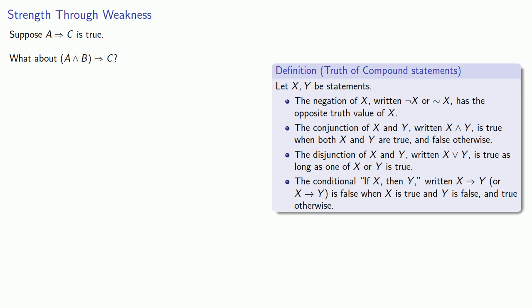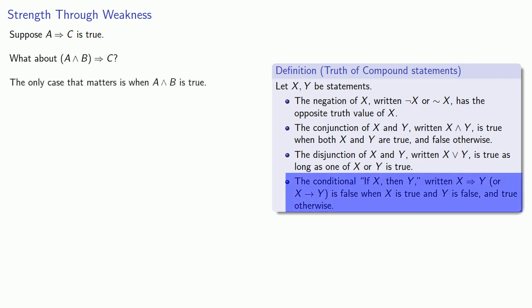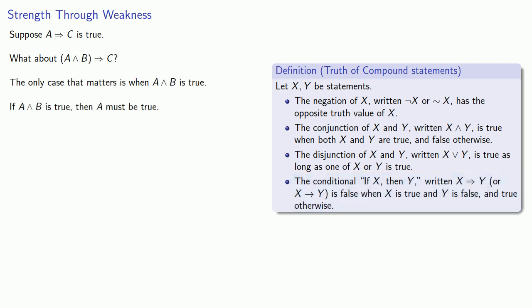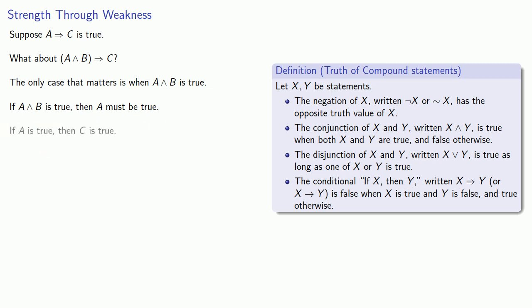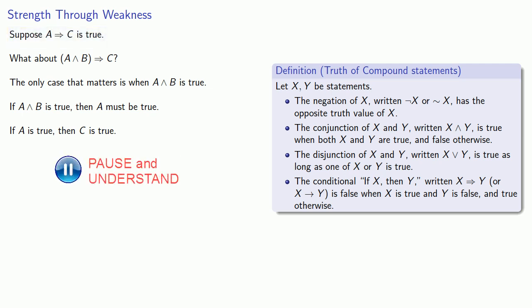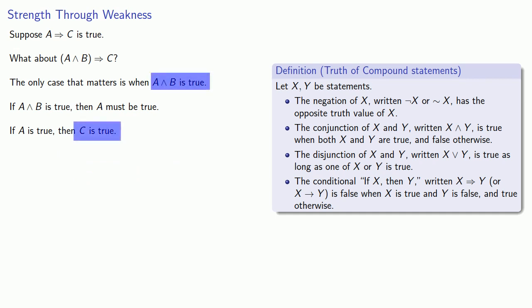Again, the only case that matters is when 'A and B' is true. Now if A and B is true, then A must be true. But if A is true, and our conditional 'if A then C' is true, then C is true. And so we can join premise to conclusion and get a proof of 'if A and B, then C.'